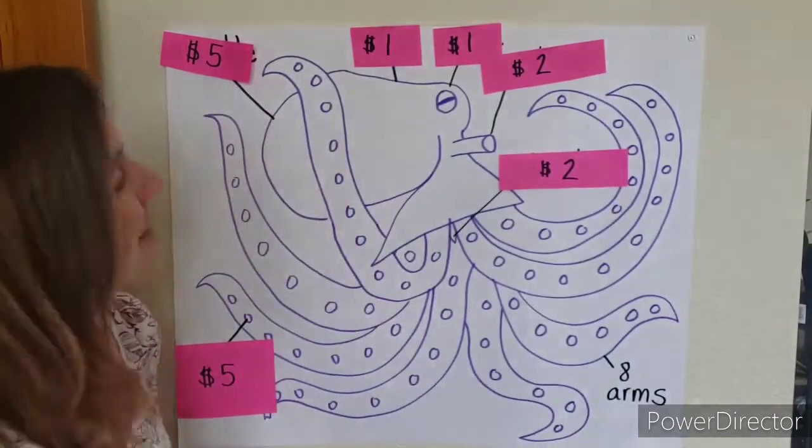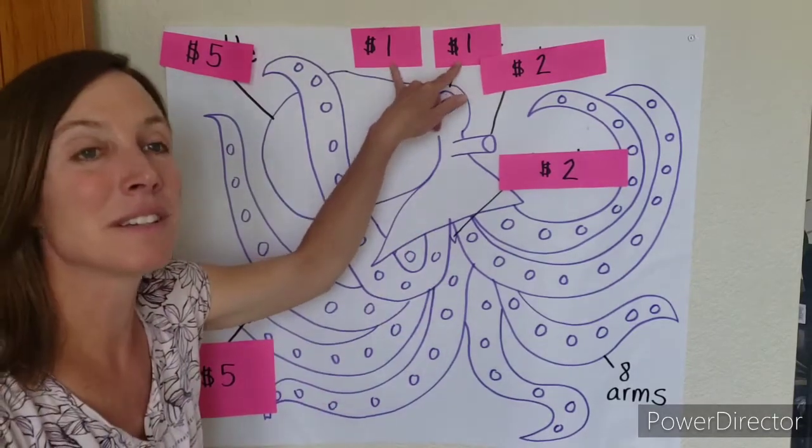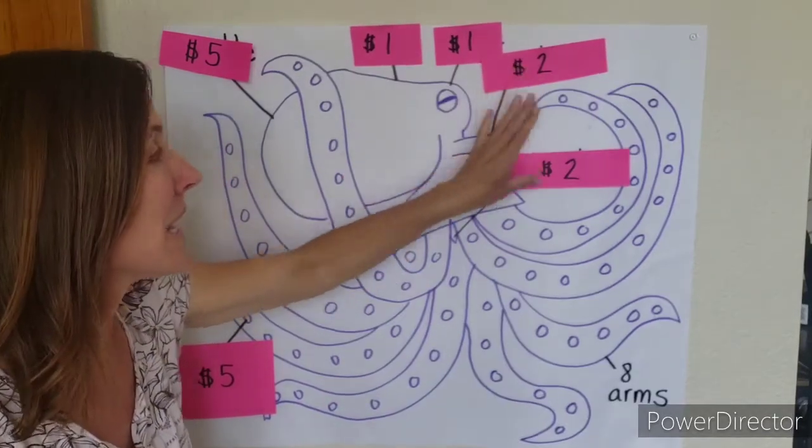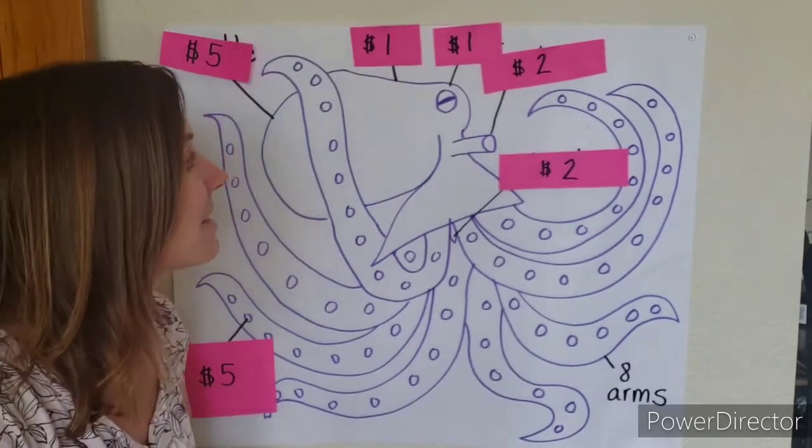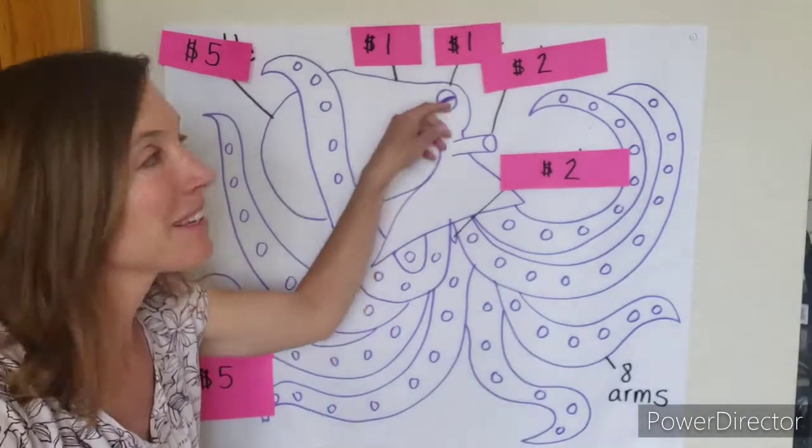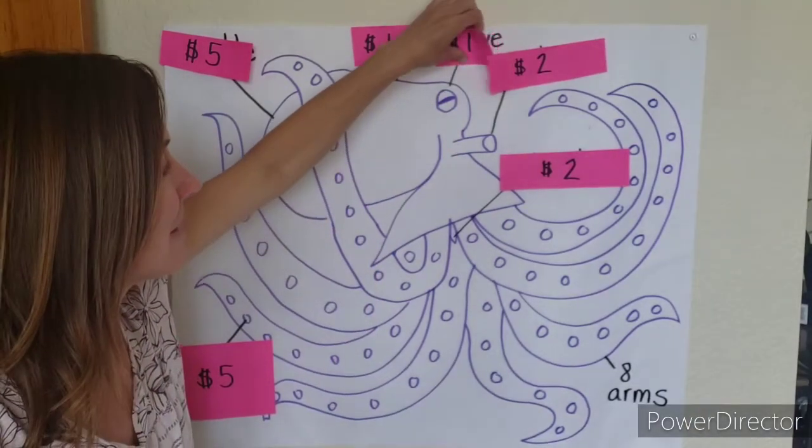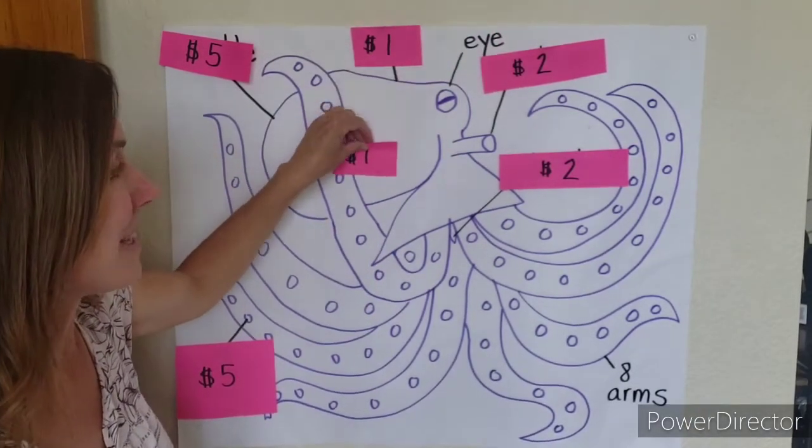Here we go. Remember, one dollar is easiest, two dollars gets a little harder, and then I made these ones five dollars. So, super easy: what's this called? That's the octopus's eyeball, and once we get him right I'm just gonna put him kind of here on his body.